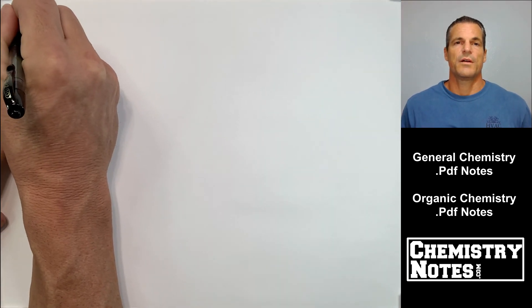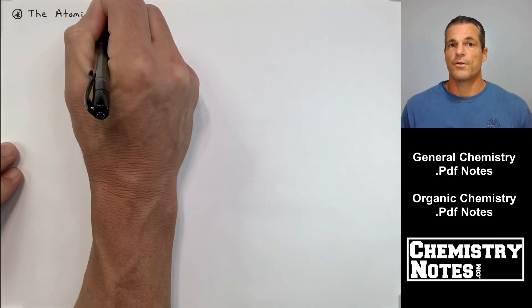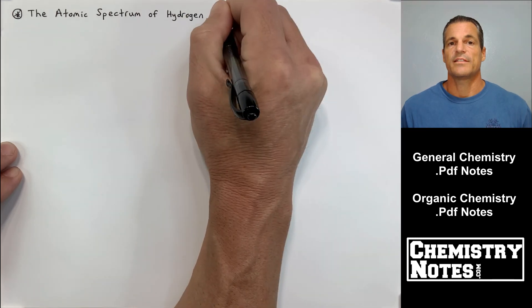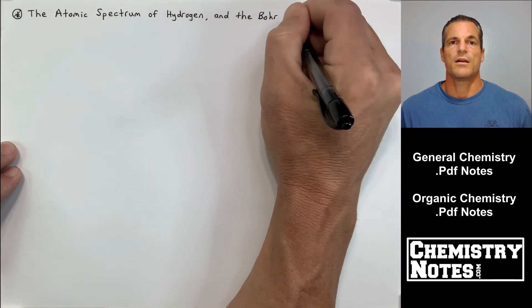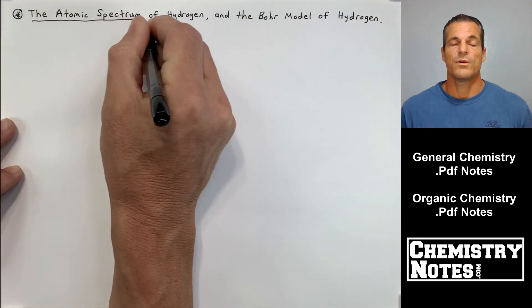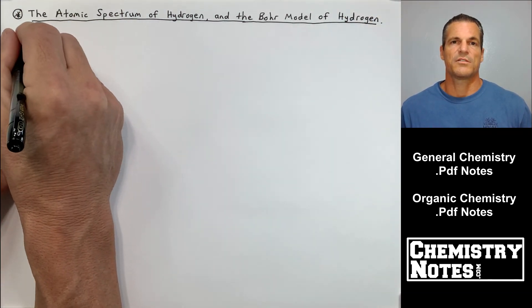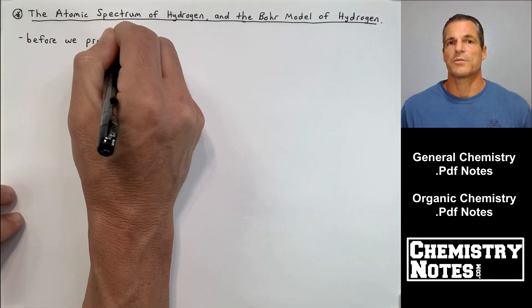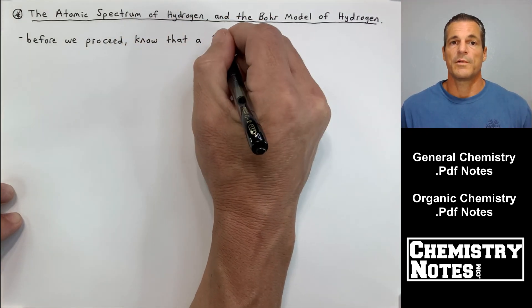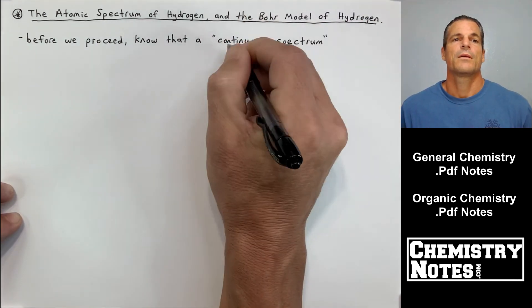Hi everybody, Justin here from chemistrynotes.com and today is our third lecture on section 7, S7E3. Section 7 is called the quantum mechanical view of the atom and periodicity. If you see the description below this video you should be able to see all the topics we're going to cover today. We have some sample problems at the end.